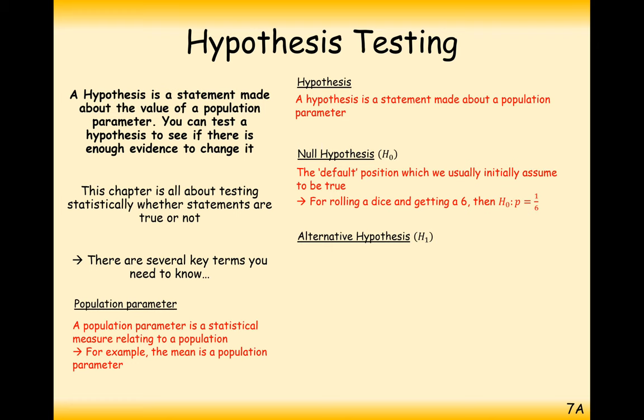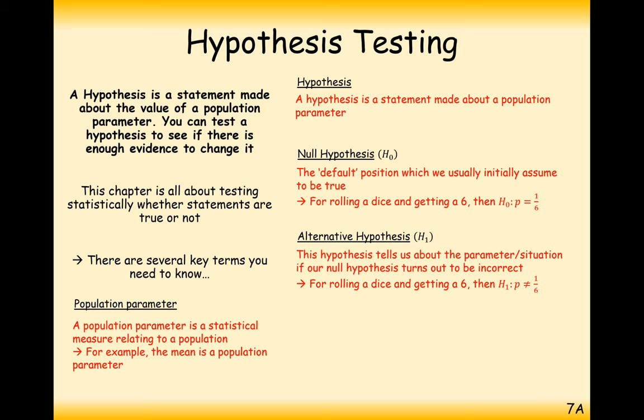The alternative hypothesis tells us about the parameter or the situation if our null hypothesis turns out to be incorrect. So if we think the dice is biased, then we say that the probability is not equal to 1/6. If it's biased towards a 6 then it would be greater than 1/6. If it's biased against a 6 then the probability would be less than 1 sixth.